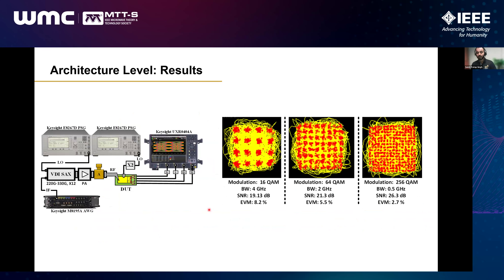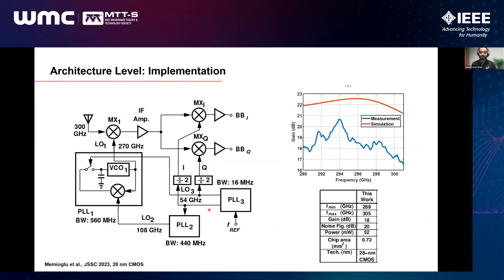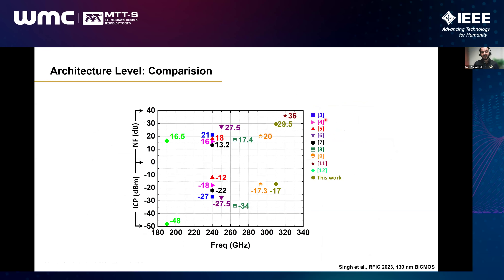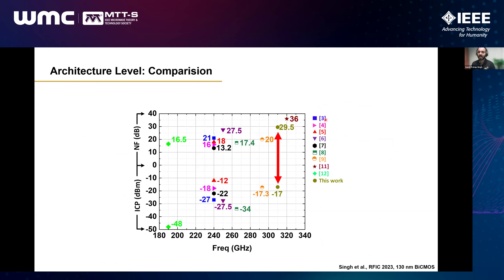Despite the high noise figure our modulated results were very good and dynamic range was reasonable. A recent example from Professor Razavi's group used the same architecture in 20 nm CMOS, burning only 52 mW for the entire circuit, though measured results were quite far from simulation and they didn't show the real measured modulated signal performance. Looking at the state of the art — ICP and noise figure as two key receiver parameters — our dynamic range is quite comparable to papers operating at much lower frequencies, showing that with the right topology and low power we can achieve good performance.